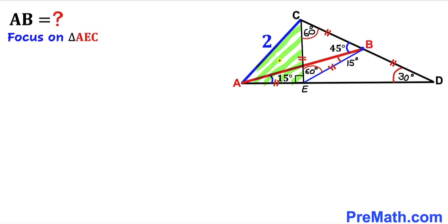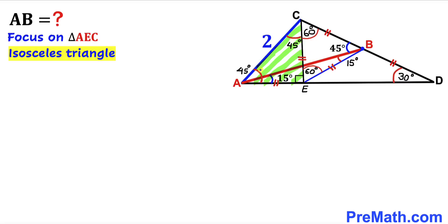In this next step let's focus on right triangle AEC. We can see that this is an isosceles triangle since AE equals CE. So therefore angle EAC is going to be 45 degrees and angle ECA is going to be 45 degrees as well. Now let's make an observation: this whole angle is 45 degrees and this angle is 15 degrees, so therefore this remaining angle is going to be 30 degrees.